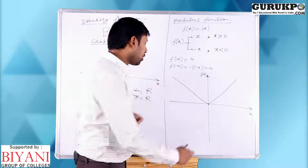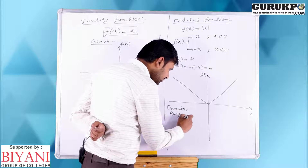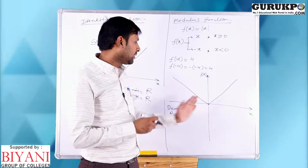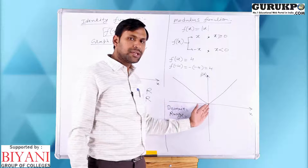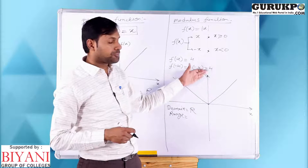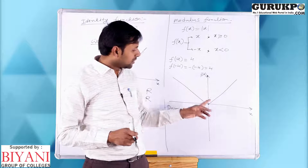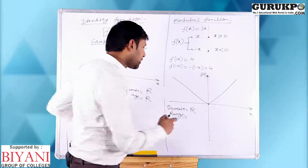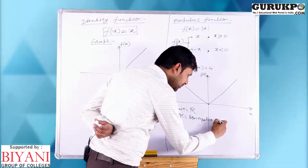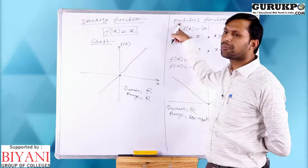Now, domain and range of the modulus function. Domain means possible values of x — x may be positive, negative, or zero — so domain is R, the real numbers. Range means possible values of f(x). Here f(x) can be 0 or positive, but f(x) cannot be negative. So range is the set of non-negative real numbers.